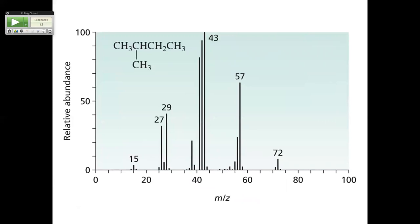Here is 2-methylbutane — an isomer of pentane. Notice the molecular ion is still 72. What is the peak at 57? It's much bigger than on the last slide. Why? Because 72 minus 57 is 15 — we lost a methyl. But in 2-methylbutane, we now have three chances to lose a methyl. So as you branch the molecule, the ratios of those peaks change. This is how mass spec is used to figure out structure.